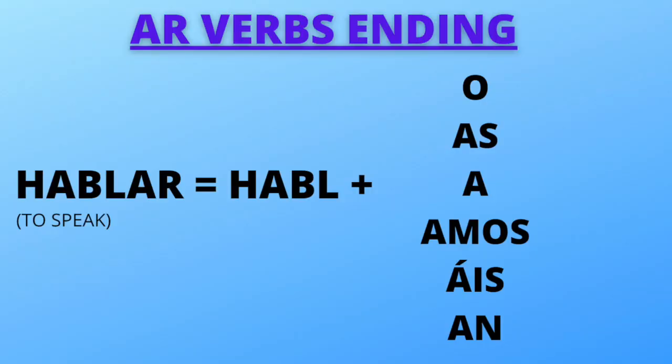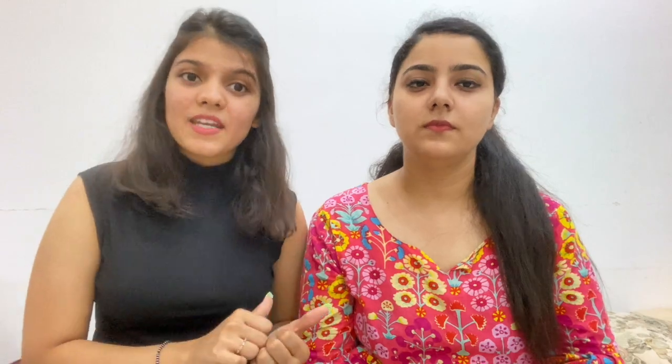The -ar ending changes in a particular manner, which goes like: -o, -as, -a, -amos, -áis, -an. Now, using these endings, if we conjugate this verb, then it will be like this.